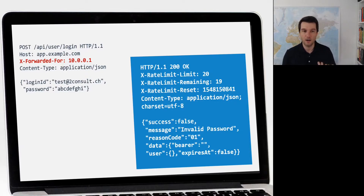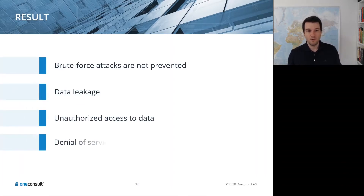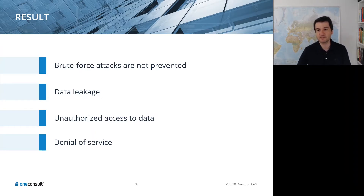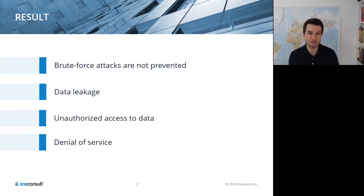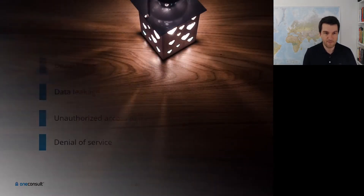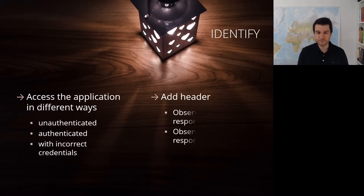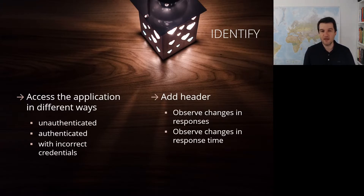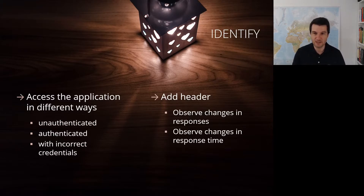The results: brute force attacks are not prevented, data may leak by an attacker requesting and harvesting all accessible data, potentially leading to unauthorized access, and denial of service if the system doesn't limit payload size — for example, accepting arbitrarily large file uploads that are then processed by the backend. To identify this issue, access the application unauthenticated, authenticated with incorrect credentials, verify rate limits are in place, and try to circumvent them by adding headers like X-Forwarded-For and observing changes in responses and response times.